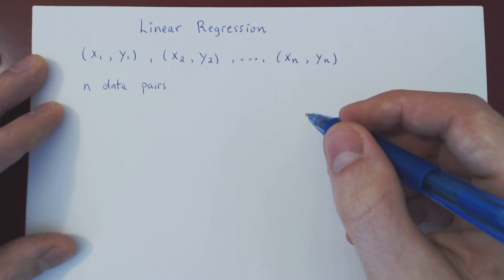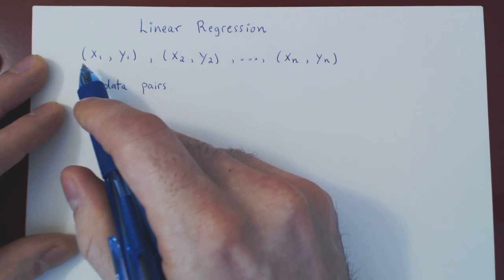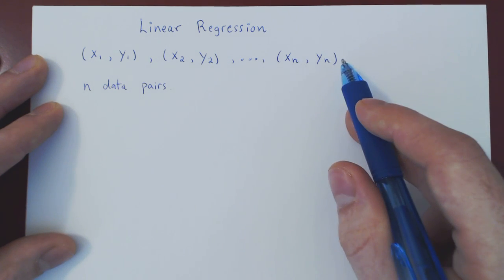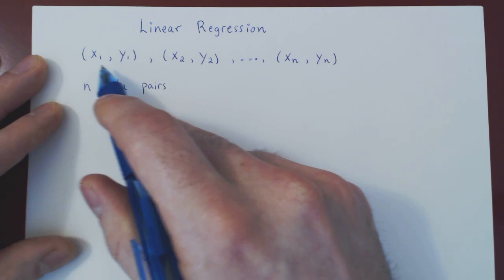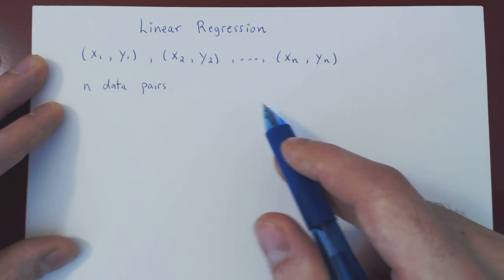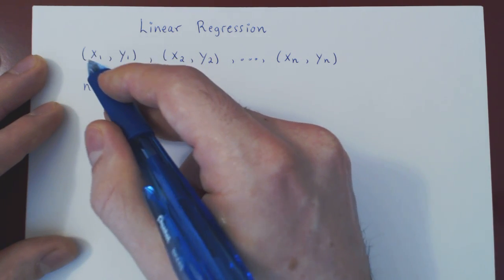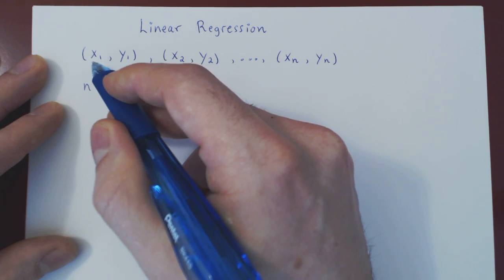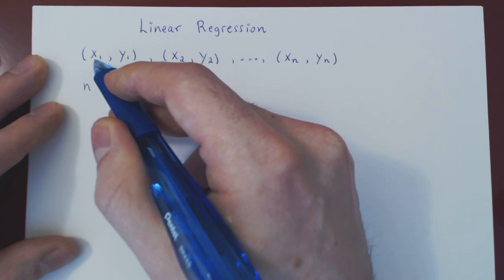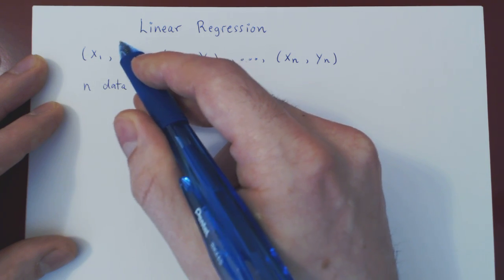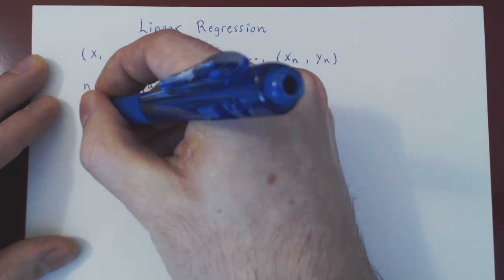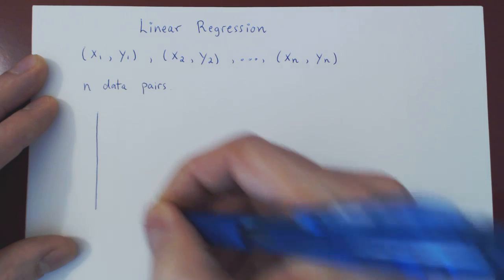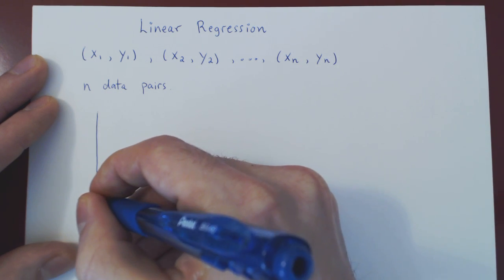Again, the question is: does there exist a linear relationship between the two variables, between x and y? And this can be seen if you visualize your pairs in the xy plane. The first coordinate will be the coordinate of the point along the x-axis, and the second coordinate will be the coordinate along the y-axis. So you can imagine producing what's called a scatter plot, or a scatter diagram.